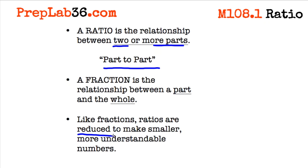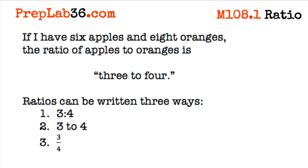Let's take a look at a ratio problem. If I have 6 apples and 8 oranges, the ratio of 6 to 8 is reduced to 3 to 4. That's it — all you have to do is reduce it like a fraction.